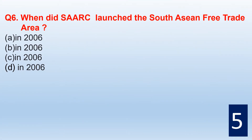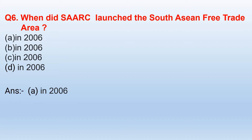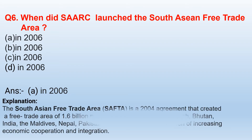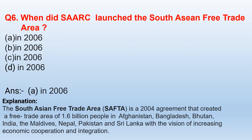When did SAARC launch the South Asian Free Trade Area? SAFTA is a 2004 agreement that created a free trade area of 1.6 billion people in Afghanistan, Bangladesh, Bhutan, India, the Maldives, Nepal, Pakistan, and Sri Lanka, with a vision of increasing economic cooperation and integration.